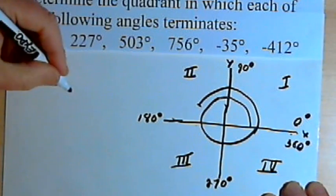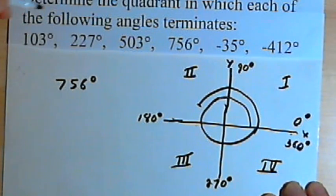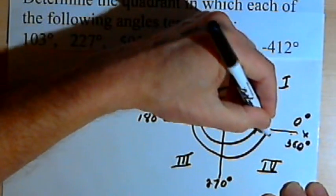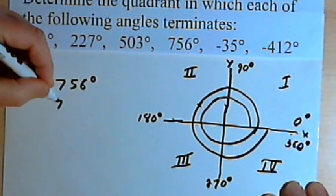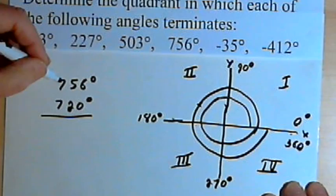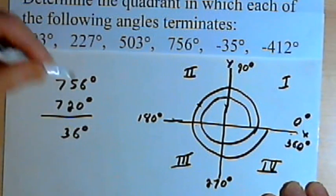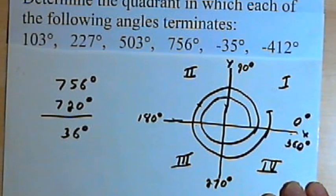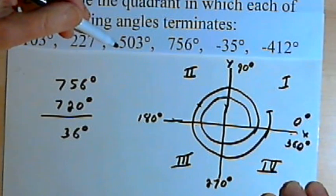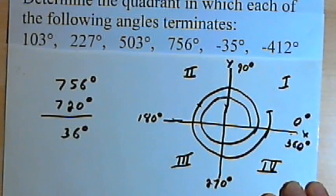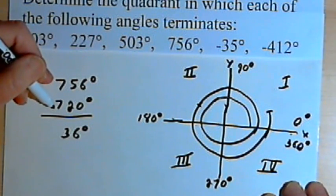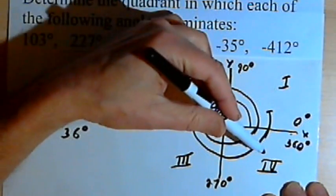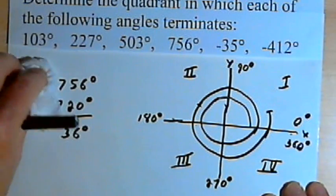For an even bigger angle of 756 degrees, the angle went twice around the origin, which is 720 degrees. Subtracting 720 from 756 leaves 36 degrees. Since 36 is between 0 and 90, the angle terminates in the first quadrant. So for positive angles greater than 360 degrees, subtract a multiple of 360 until you have a positive number between 0 and 360, then use that to find the terminating quadrant.